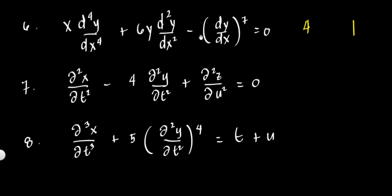Example 7: We have the second partial derivative of x with respect to t, minus 4 times the second partial derivative of y with respect to t, plus the second partial derivative of z with respect to u. All derivatives are of order 2, so the order of the differential equation is 2. The highest derivatives are each raised to the first power, so the degree is 1.